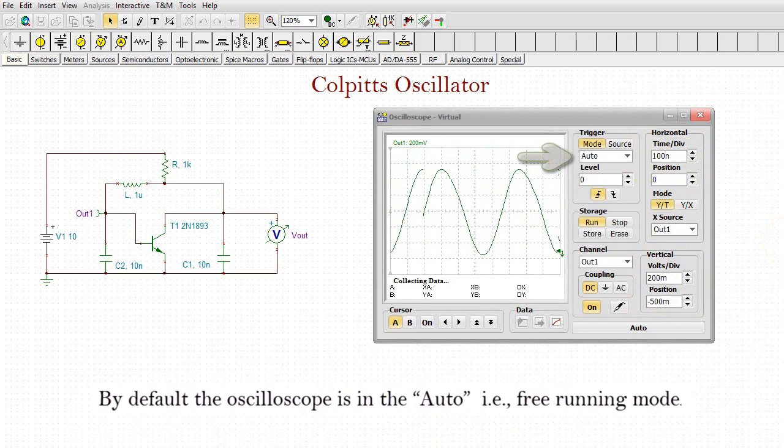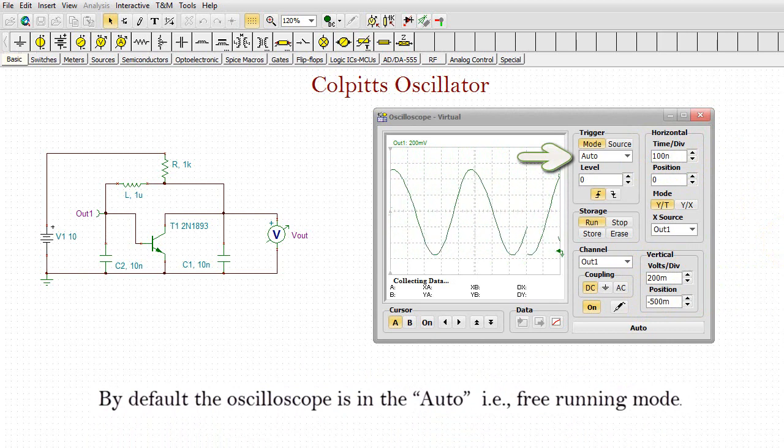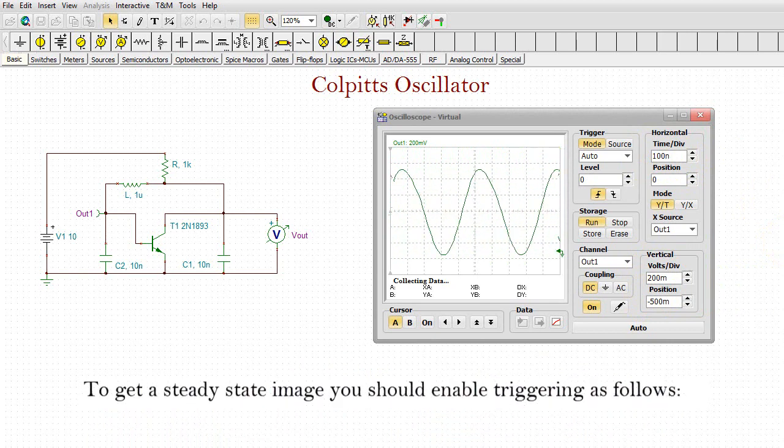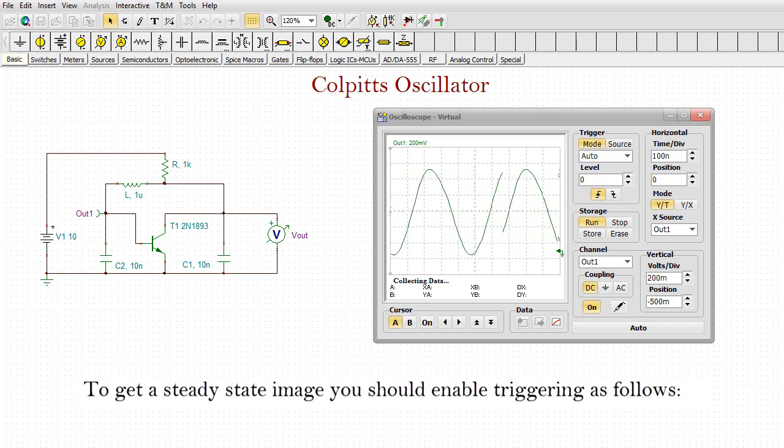Use the controls to make the curve bigger and more detailed. By default, the oscilloscope is in the auto, i.e. free running mode. To get a steady state image, you should enable triggering as follows.